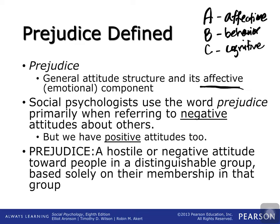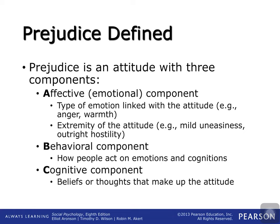If you feel a certain way toward a certain ethnicity, everybody in that group is lumped together because they're a member of that group. If you feel a prejudice toward a certain sorority or fraternity, anybody in that fraternity or sorority — because they're a member of that group — you're going to feel that way toward that person. Our attitude toward people contains three major components: affective, behavioral, and cognitive.